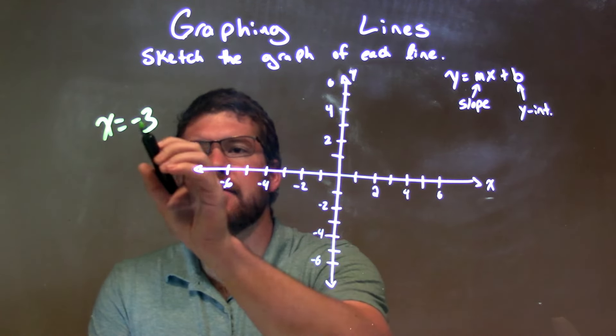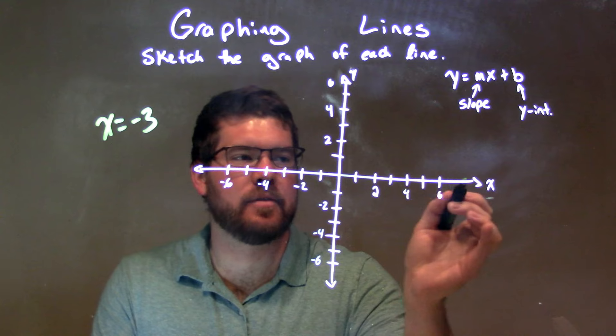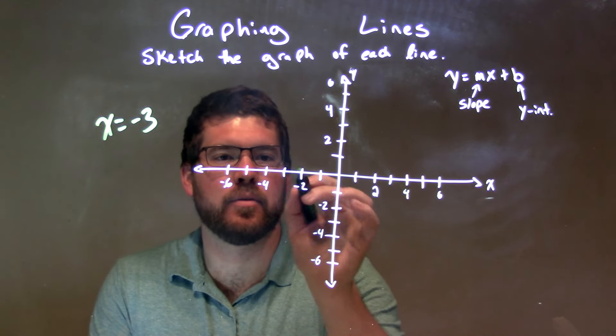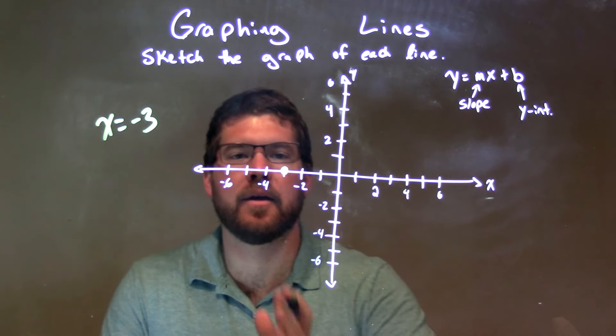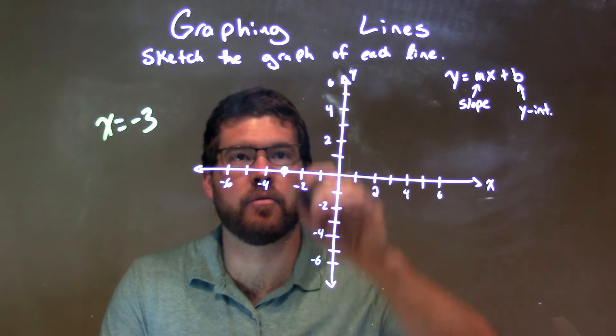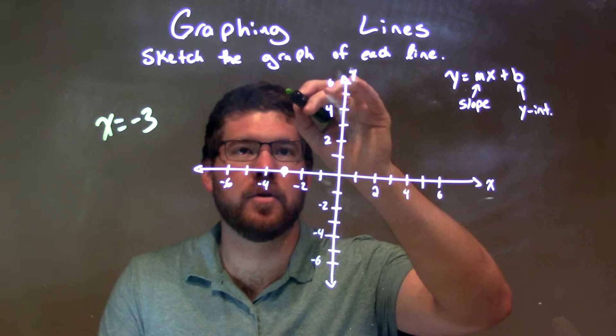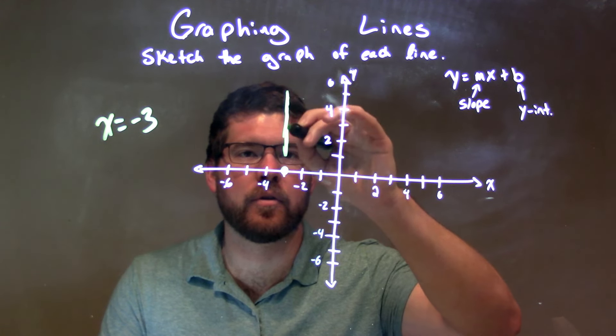At negative 3, we cross the x-axis, so x-axis right here is negative 3, the dot right there. Then from there, we just make a vertical line that goes through where x is negative 3. Fairly simple, once you know how to do it, we just draw that vertical line.